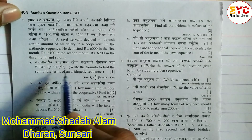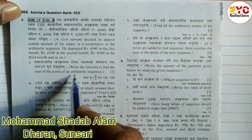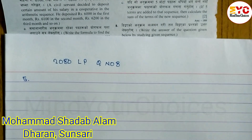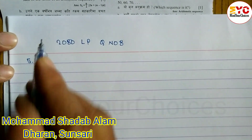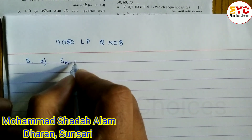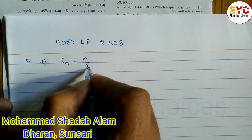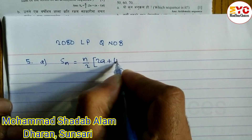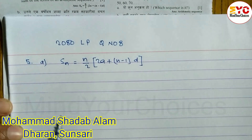Number A: Write the formula to find the sum of the terms of an arithmetic sequence. The sum formula is: Sn = n/2 × (2a + (n−1)d).